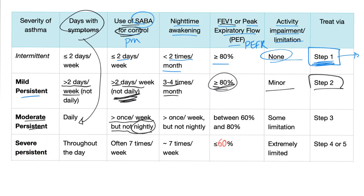Severe persistent asthma: symptoms throughout the day every day — wheezing, cough, shortness of breath, and mucus. Use of short-acting beta agonists every day. Nighttime awakening every day. FEV1 less than 80%. Extremely limited capability during daily activities. Treat using step four or five.